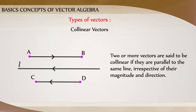Collinear Vectors: Two or more vectors are said to be collinear if they are parallel to the same line, irrespective of their magnitudes and directions.